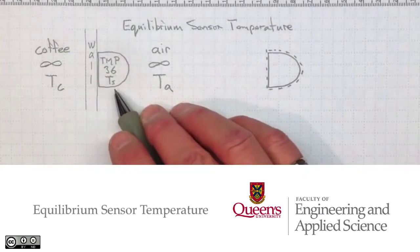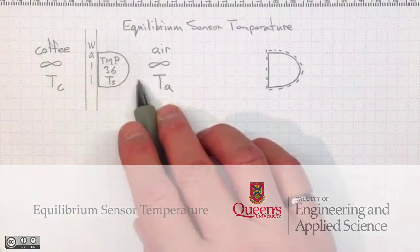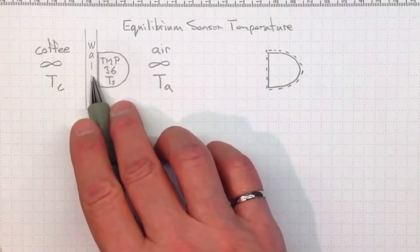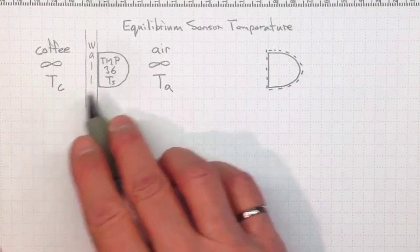If we wait long enough, a sensor like this TMP36 will come into equilibrium with its surroundings. In this case, we've got it up against the wall of a coffee cup with hot coffee on one side at temperature T_coffee.